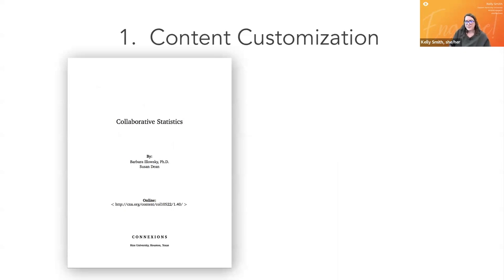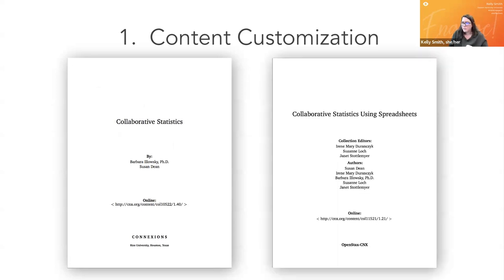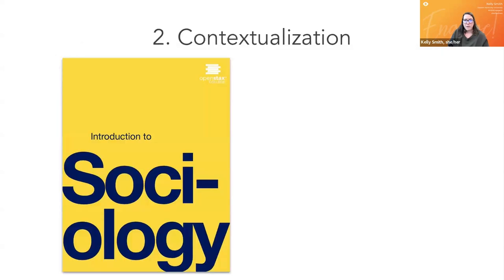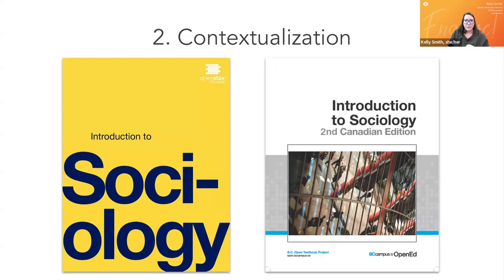This is an example of content customization — on the left is an open textbook for a low-level statistics course, very broad; on the right is a derivative that includes content specific to learning statistics with spreadsheets, meeting specific content goals of a course. Contextualization: on the left is an open textbook created at Rice University; on the right is a derivative — the Canadian edition — which takes that broad textbook and customizes it to the Canadian context.